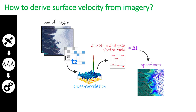The spatial resolution of images defines the limit and the precision of displacement estimation, and thus the error rate on speed. That is why it is challenging to measure speed over small time spans or over slowly flowing glaciers using moderate-resolution imagery.